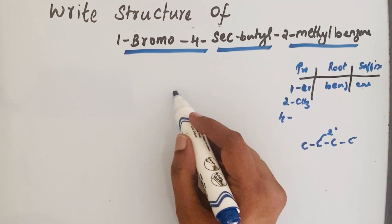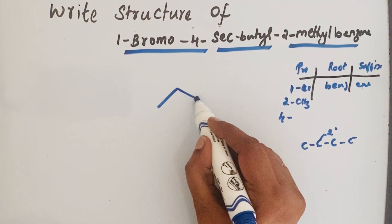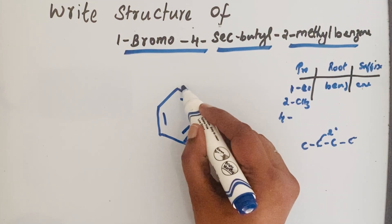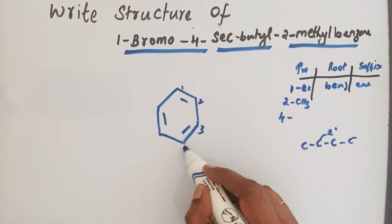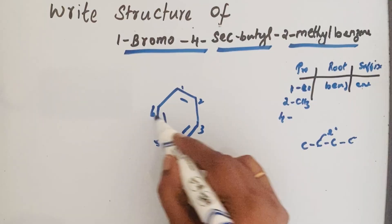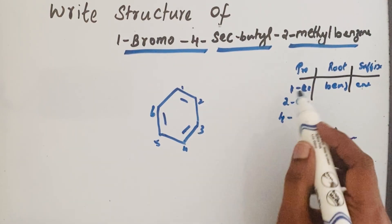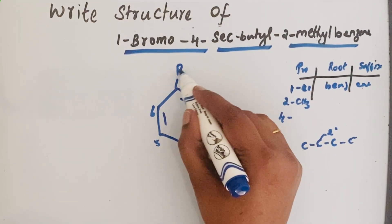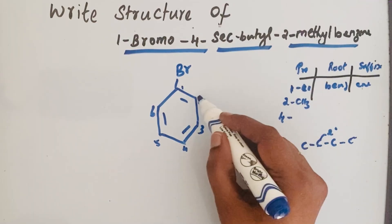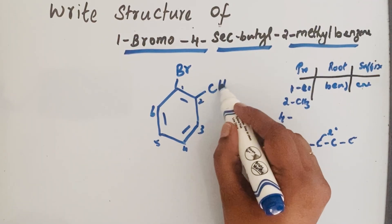First, let us draw the benzene ring. Let us number it: one, two, three, four, five, six. In the first carbon we have bromine, then in the second carbon we have methyl group CH3, and in the fourth carbon we have secondary butyl.